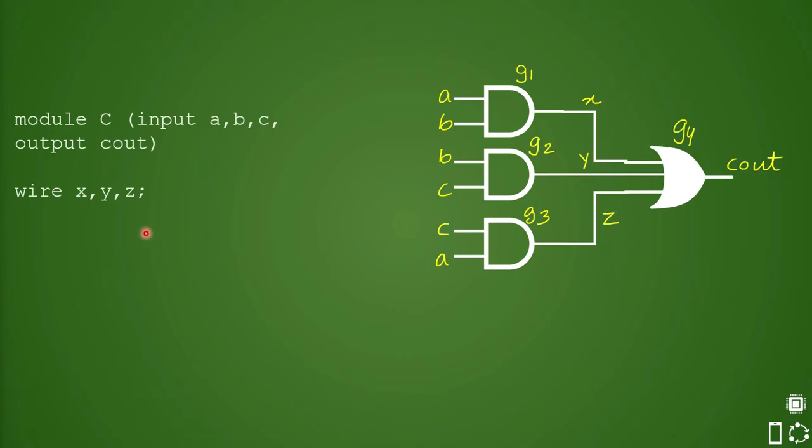Now it will start defining all the components one by one including the input and their type. First is AND gate. It will define the type of gate, that is AND gate. Name of the gate is g1 and it has inputs a and b and one output x. First it will define output x and then a, b, then that wire is defined.